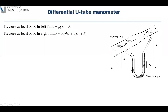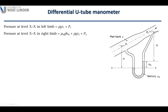We draw an XX line at the lower separation point — the lower mercury surface. For each limb, we use the vertical distance to calculate pressure, not the curved path along the tube. For the left limb, the pressure at the XX level equals rho*g*z1 plus P1.